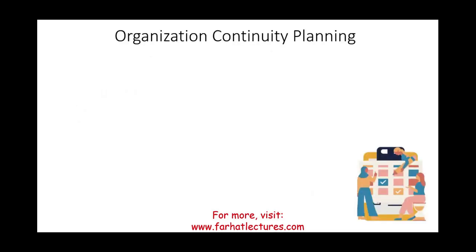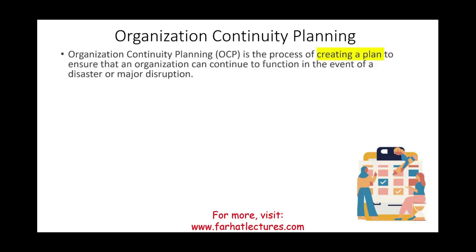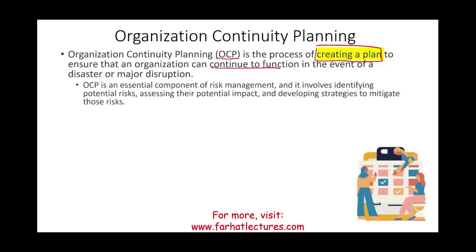What is organizational continuity planning? Simply put, it's a planning process — abbreviated as OCP. OCP is the process of creating a plan ahead of time to ensure that an organization can continue to function in case of a disaster or major disruption. Did you brainstorm this idea? Did you talk to management? Did you strategize? OCP is an essential component of risk management — you must identify potential risks, list them, assess their potential impact, and develop strategies to mitigate those risks.